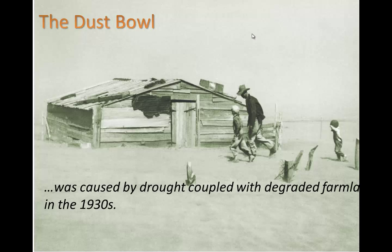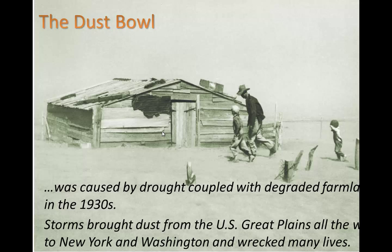A major event happened in the 1930s — the Dust Bowl. It was caused by drought coupled with degraded farmland. Dust storms brought dust from the US Great Plains all the way to New York and Washington, wrecking many lives. You had a couple of decades of intensive industrial agriculture — big tractors plowing fields — which really disturbed the structure of the topsoil and caused it to lose its ability to hold together. Then a big drought came, the soil dried up, and then big winds blew that dust in some cases all the way to New York and Washington. You can see just how thick the dust was — this used to be a full-sized door until the dust filled it up to the midpoint.